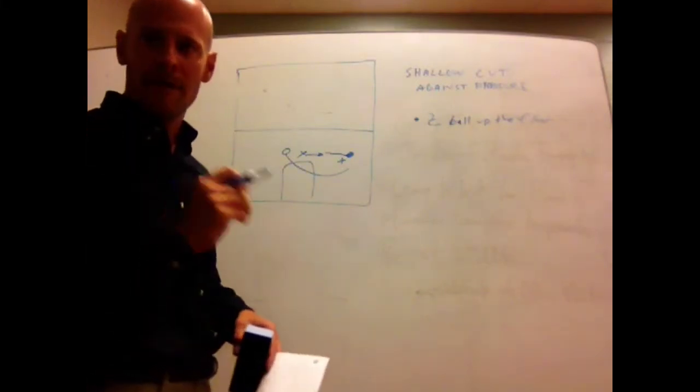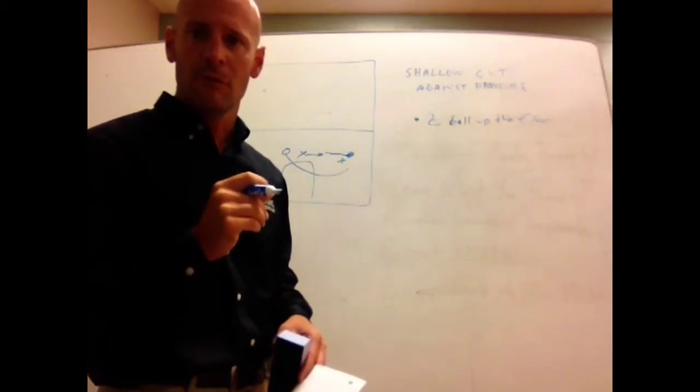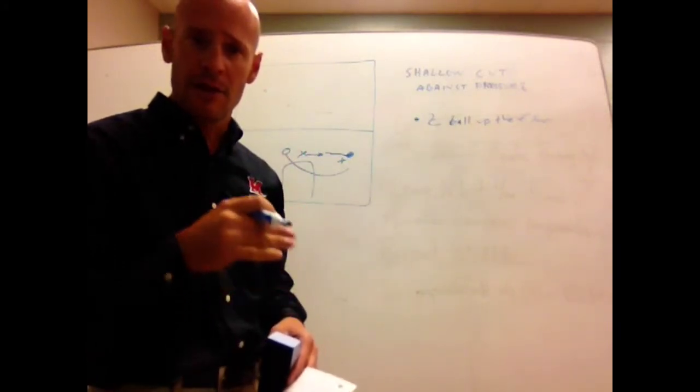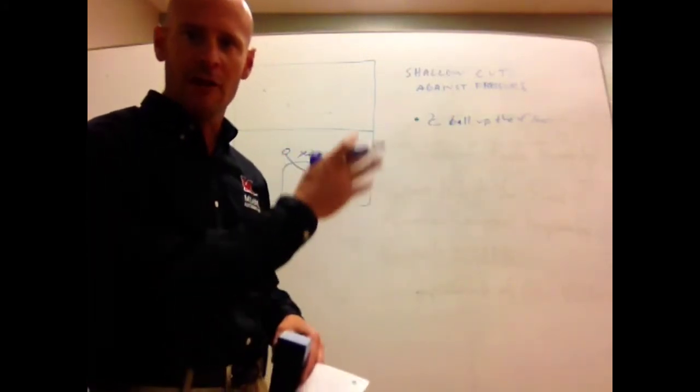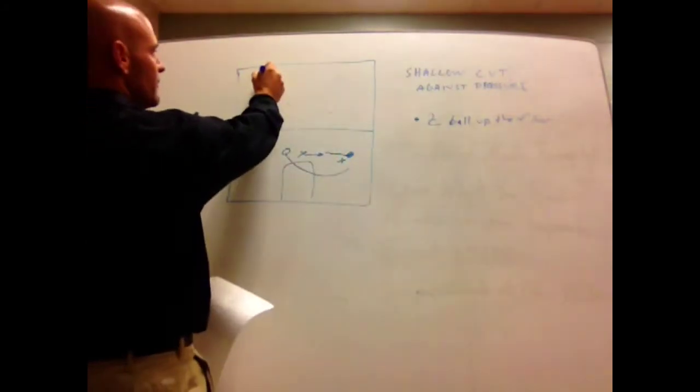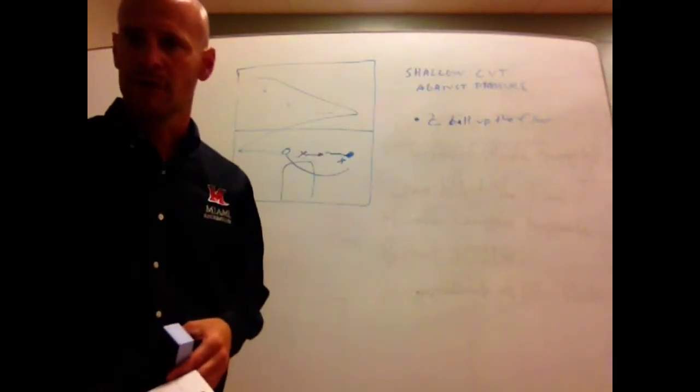So the basic rule of using the shallow cut is when your offensive teammate is dribbling at you and your defender leaves to go trap the ball, you make the shallow cut to the opening, and then that gives you the opportunity to make that nice Z pattern up and down the floor to relieve pressure.